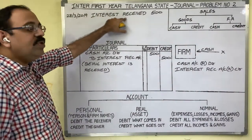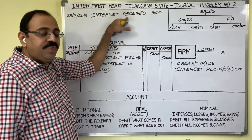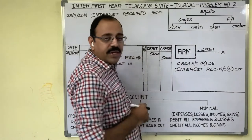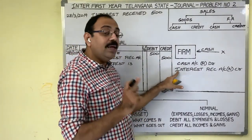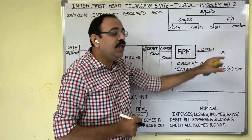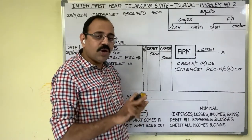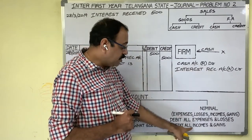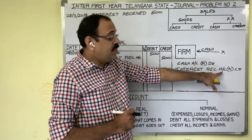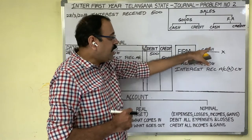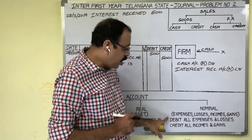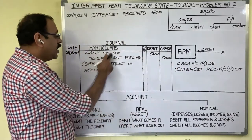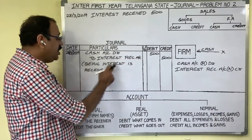The twenty-eighth day transaction is: interest received, 500 rupees. This is an income transaction; person's name is not given. Cash is an asset — real account. Interest received account is income — nominal account. Real account rule: cash is coming, debit cash account. Nominal account rule: credit all incomes and gains — this is income, so credit interest received account. Final entry: Cash Account Dr. to Interest Received Account. Narration: being interest is received.